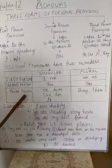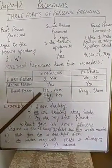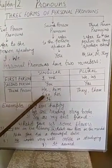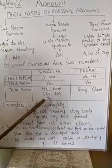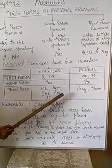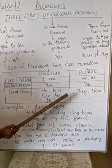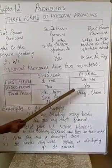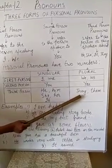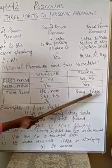Third person pronouns are he, him, she, her, and it. Third person pronouns in plural form are they and them.